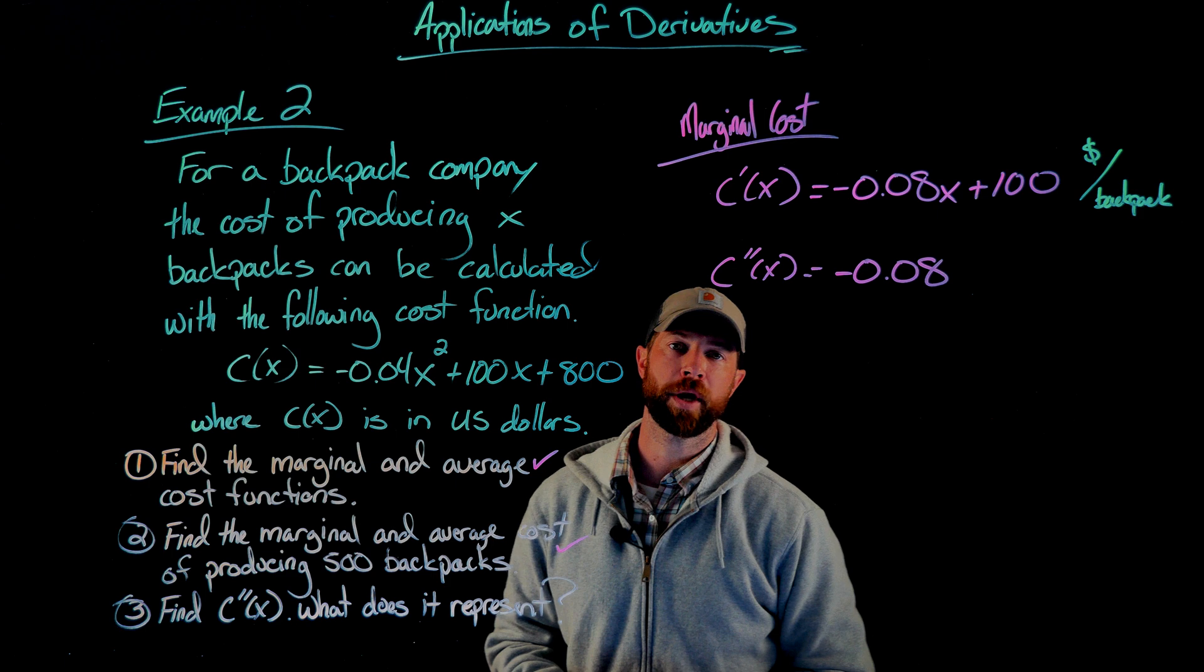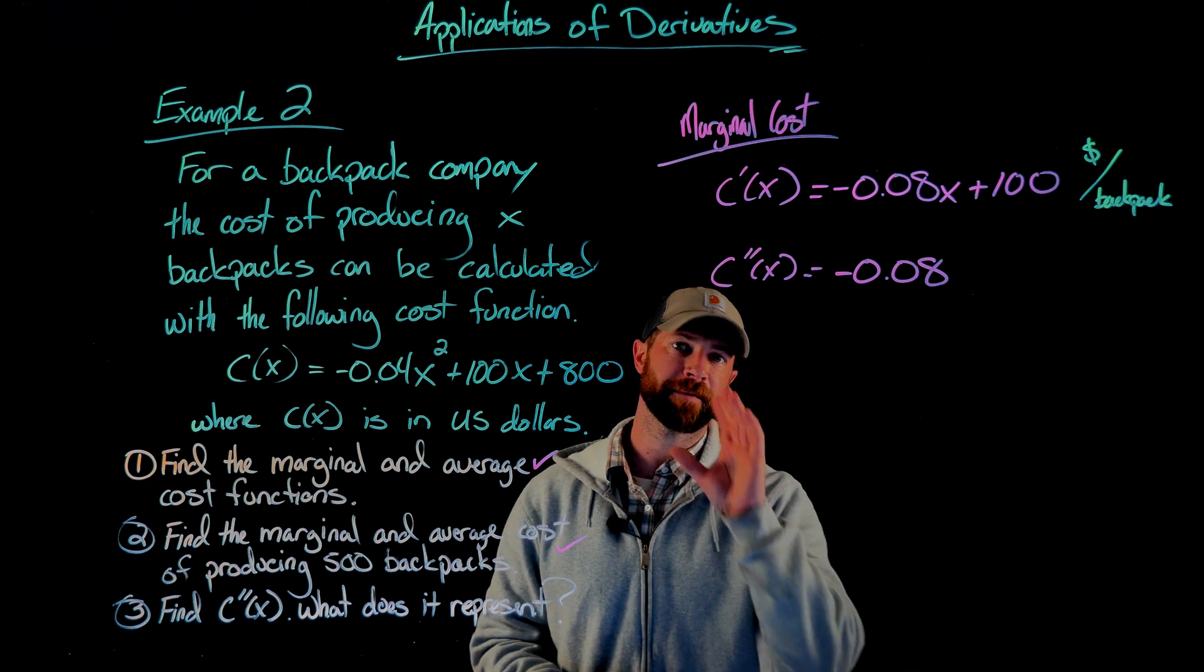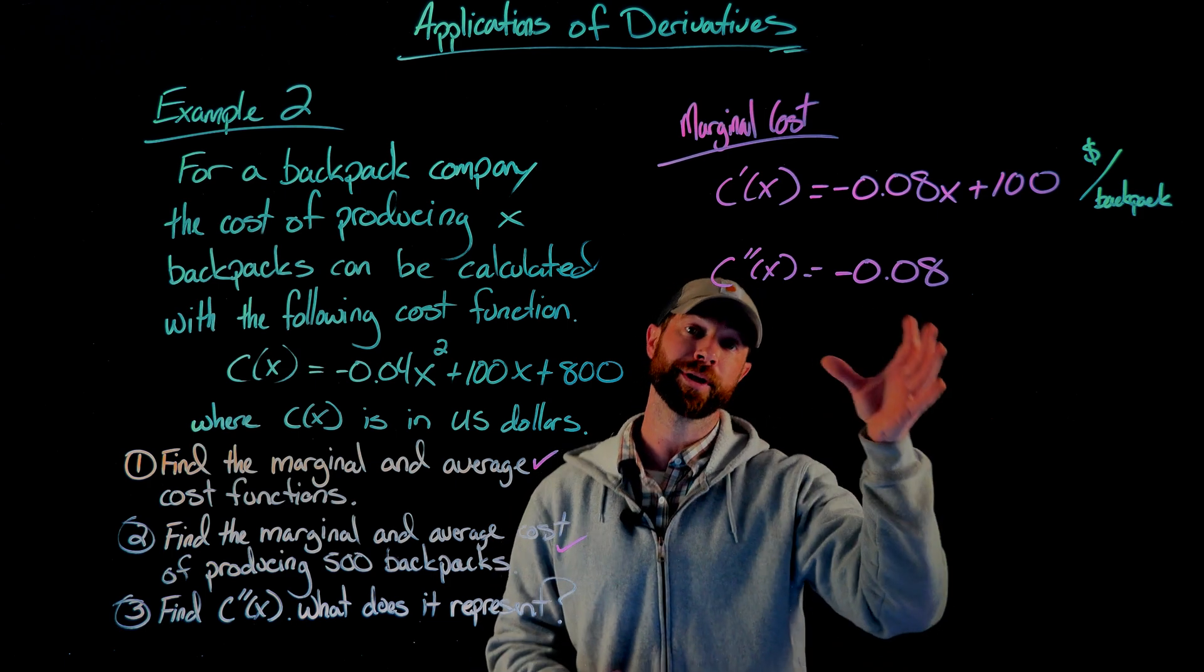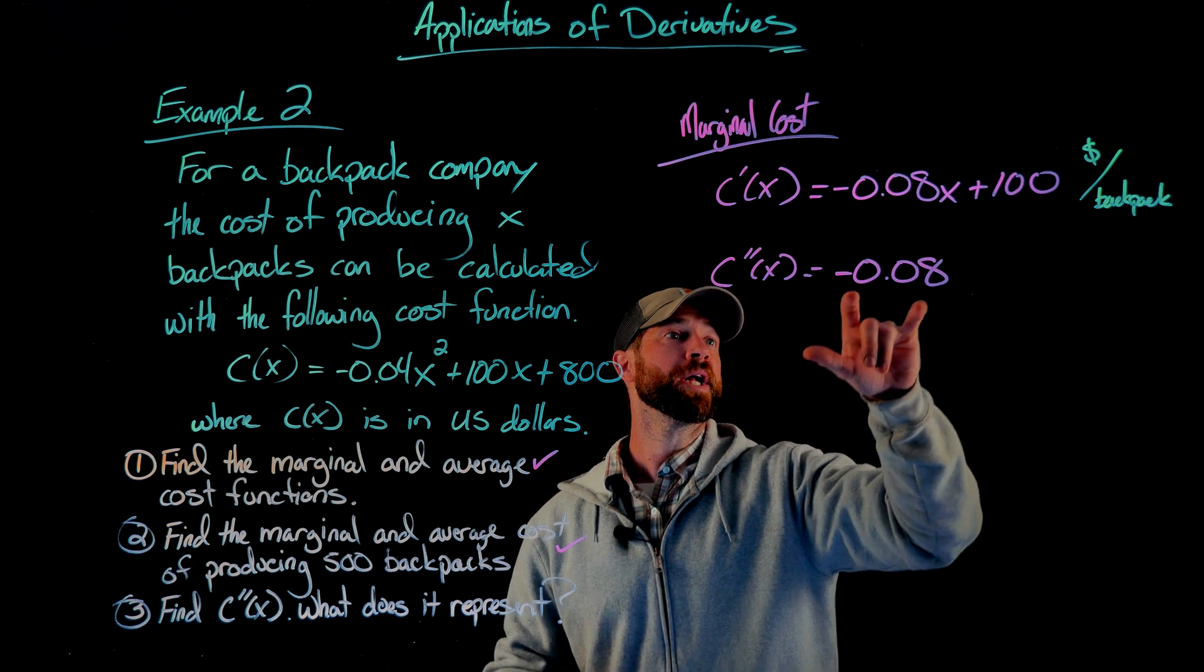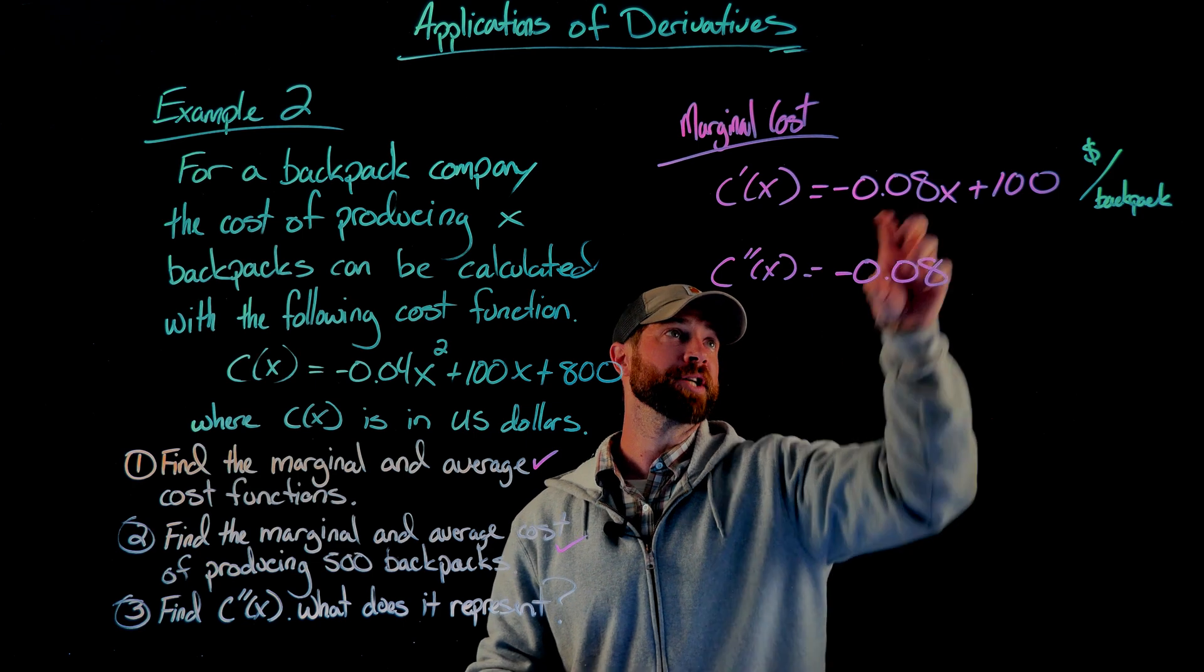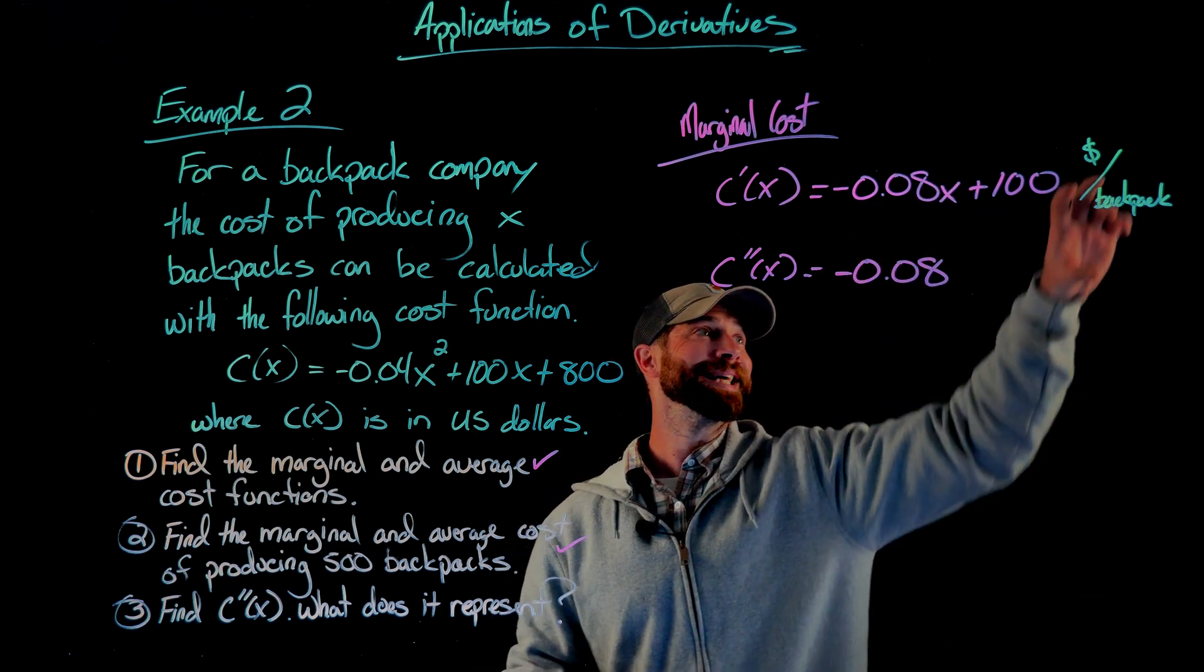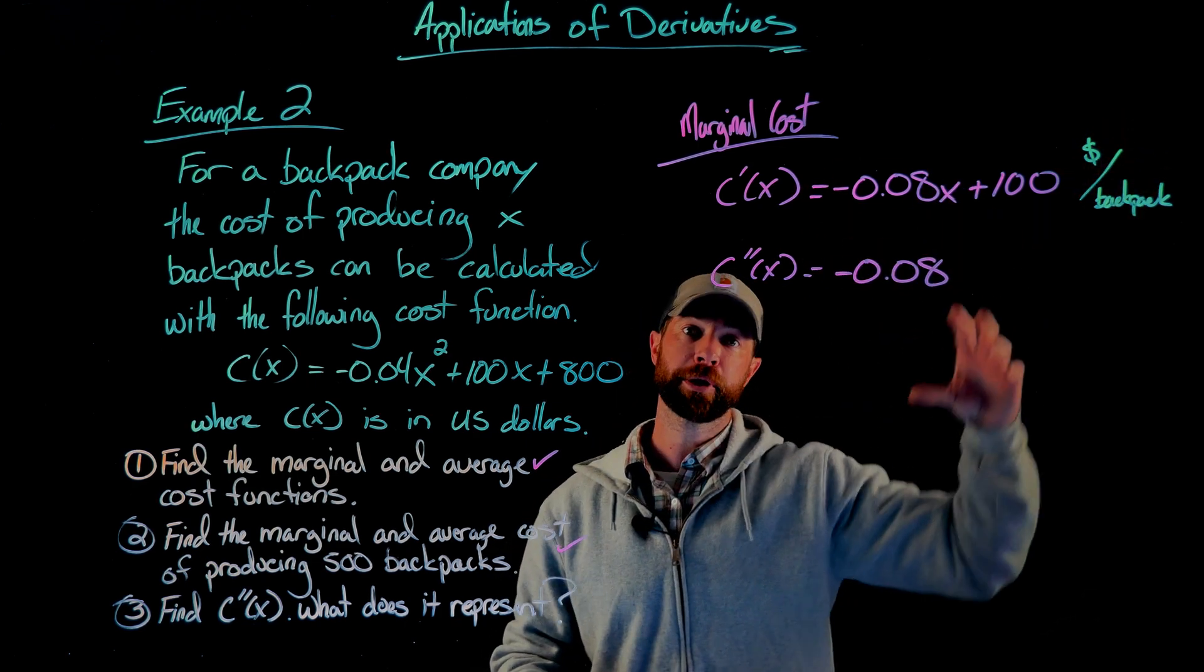We want to try to think about what it means. There's a couple of different ways of doing this. But first, what I will always do is compute its units, which help me try to figure out what it represents. In this case, what we're going to do, this derivative is the rate of change of the derivative above. So what we're going to get is the cost per backpack per backpack.